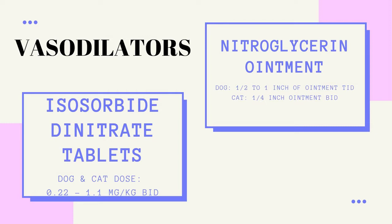Isosorbide dinitrate is another nitro vasodilator that relaxes venous smooth muscle. This pharmacological compound is absorbed orally. Isosorbide dinitrate is also used to reduce preload in patients with congestive heart failure.